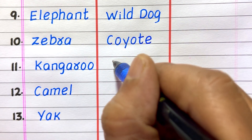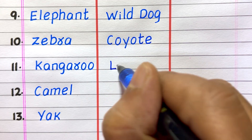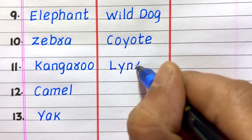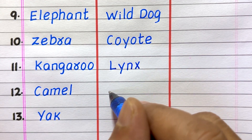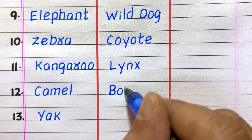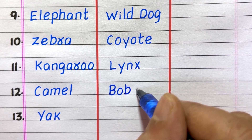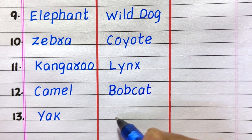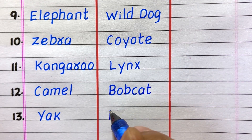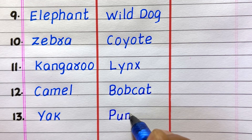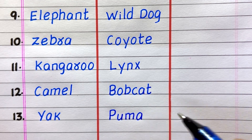Ninth example of a carnivore animal is wild dog, tenth coyote, eleventh lynx, twelfth bobcat, thirteenth puma.